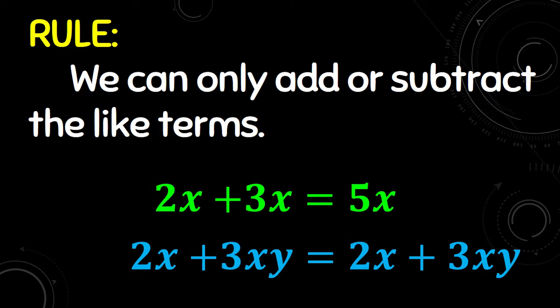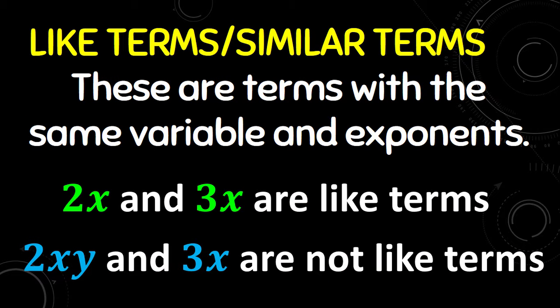What are like terms? Like terms or similar terms are terms with the same variable and exponents. For example, 2x and 3x are like terms because they have the same variable. Another example is 2xy and 3x — they are not like terms because 2xy has x and y, while 3x has x only.